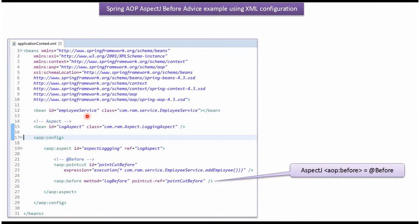This is the Spring configuration file. Here I have created the EmployeeServiceBean and defined the Aspect class as LoggingAspect. Here I have defined the PointCut — the PointCut is the AddEmployee method of the EmployeeService class. So this method will be intercepted, and the LogBefore method of LoggingAspect will be called before calling AddEmployee.